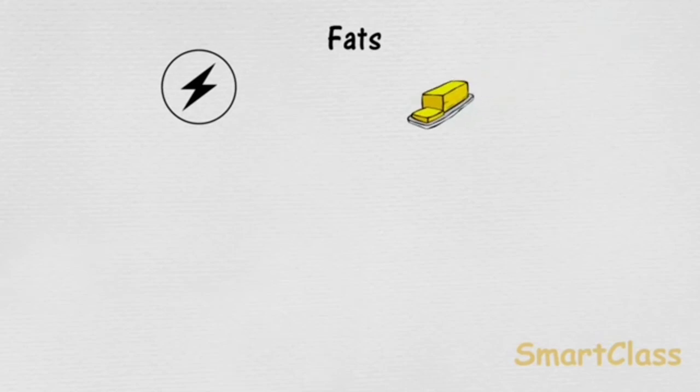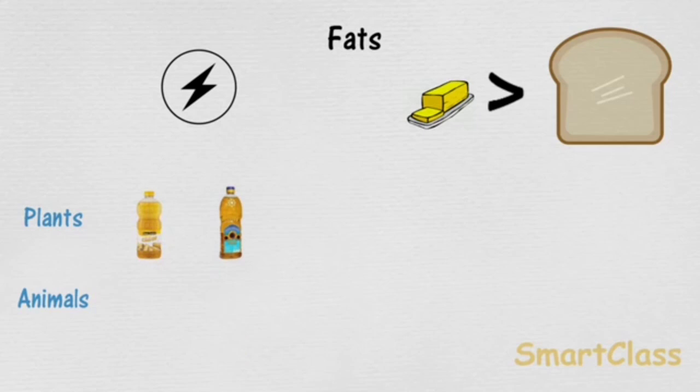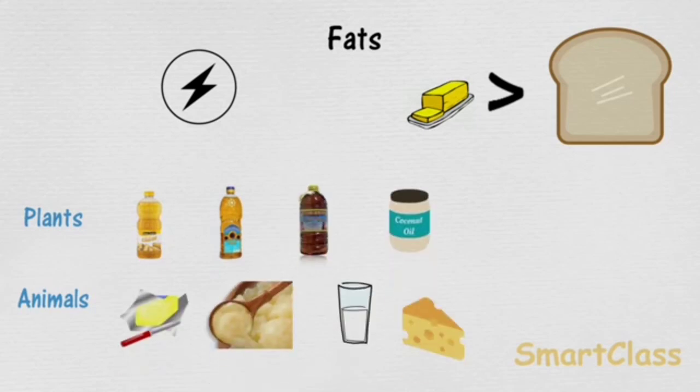Next, fats. Fats also give us energy. In fact, fats give much more energy as compared to the same amount of carbohydrates. Foods containing fats and carbohydrates are also called energy-giving nutrients. Sunflower oil, coconut oil, soybean oil, and mustard oil are plant products which are rich in fats.